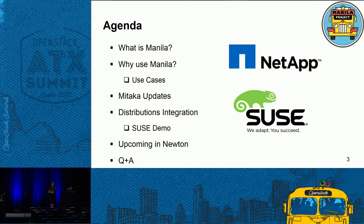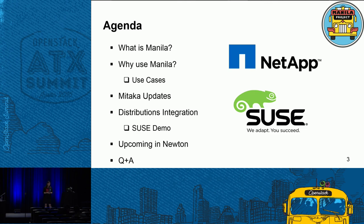Manila is named after the city in the Philippines — you may have heard it in that context or heard of Manila envelopes. We're going to talk about Manila in the context of OpenStack. We'll cover what Manila is, why you'd want to use it, use cases, Sahara integration, the Mitaka updates, distributions, a demo on NetApp storage with SUSE Cloud 6, what's upcoming in Newton, and then Q&A.